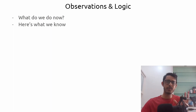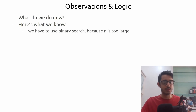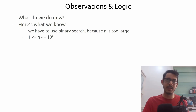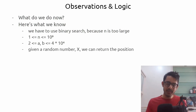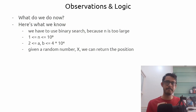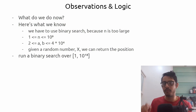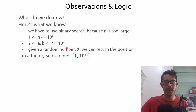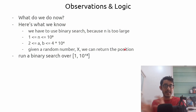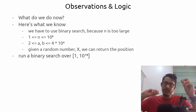Quick recap: we know we have to use binary search because n is too large — up to 10 to the power 9 — and a and b have a limit of 4 × 10 to the power 4. Given a random input x, we can return its position. So what if we run a binary search over 1 to 10 to the power 18? The binary search suggests inputs x, which we pass to our position function to get the corresponding index n.